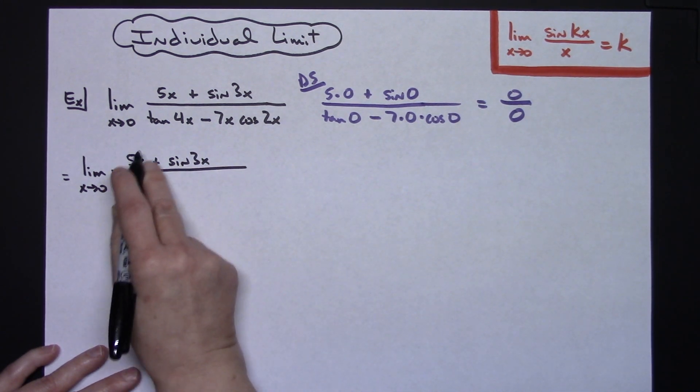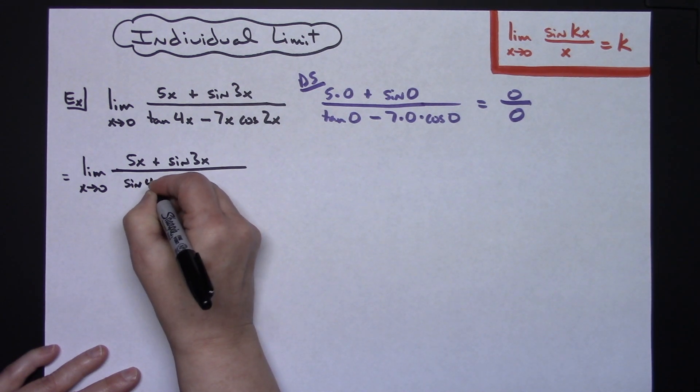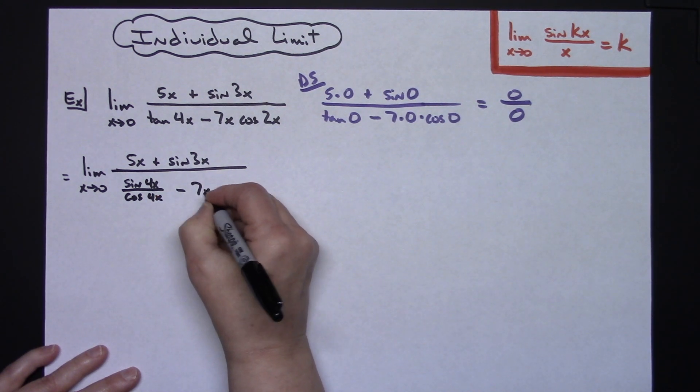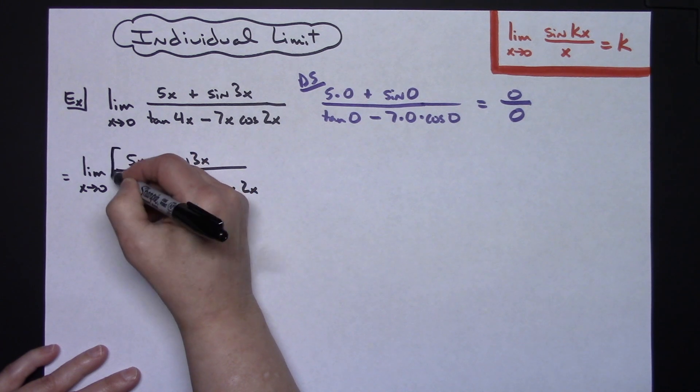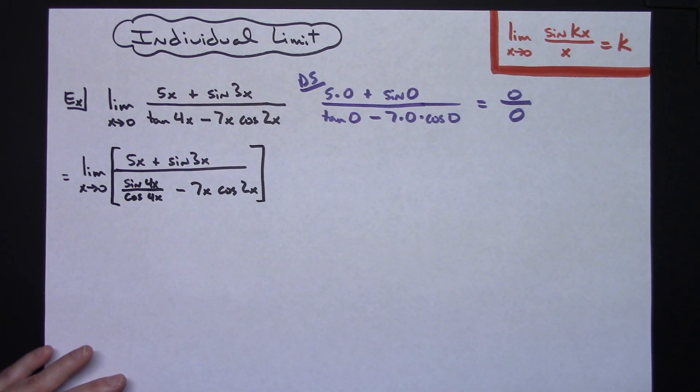And then in that denominator I'm going to rewrite this one as the sine of 4x over a cosine of 4x and then minus the 7x cosine of 2x. Let's go ahead and put some brackets around that just so we know we're taking the limit of that entire thing.